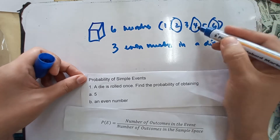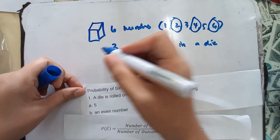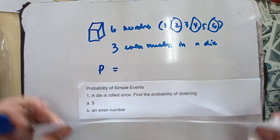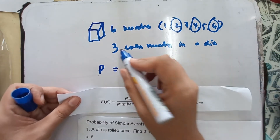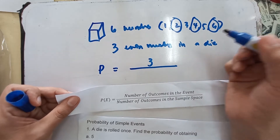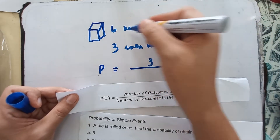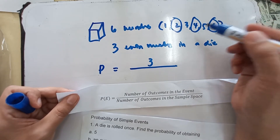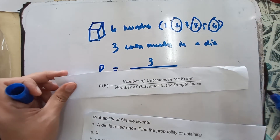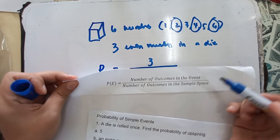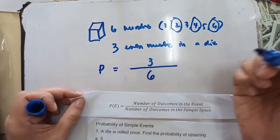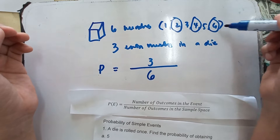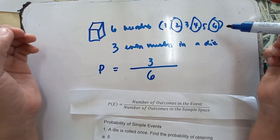Those even numbers are two, four, and six. So, the probability of getting an even number: the number of outcomes in the event is three, since there are three even numbers in a die. The number of outcomes in the sample space is six, because there are six possible numbers that could appear when you throw a die.